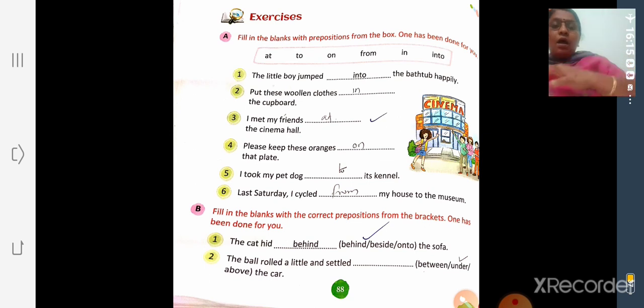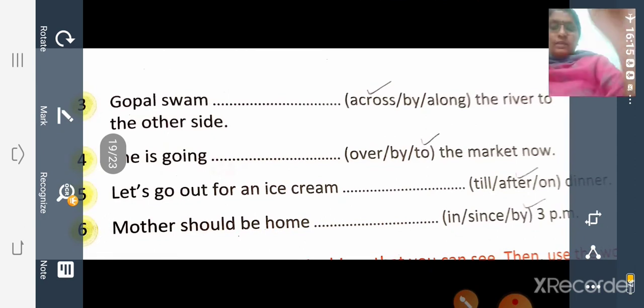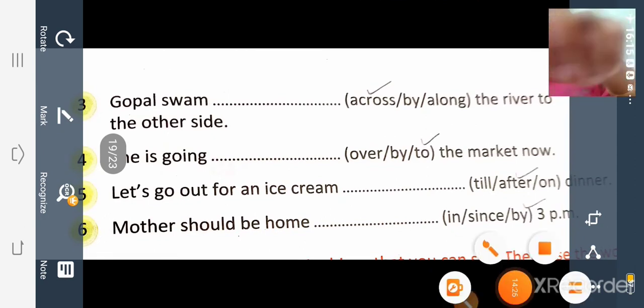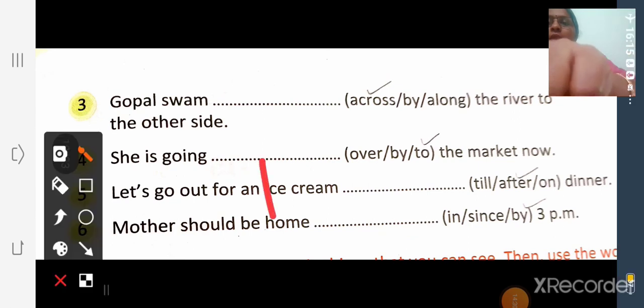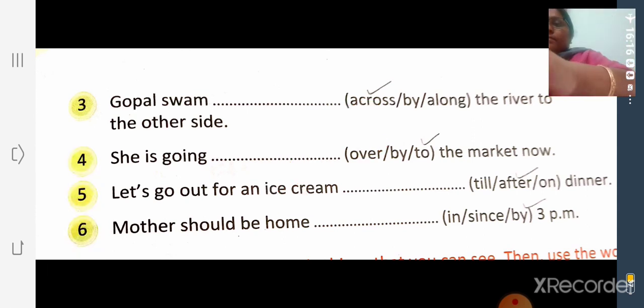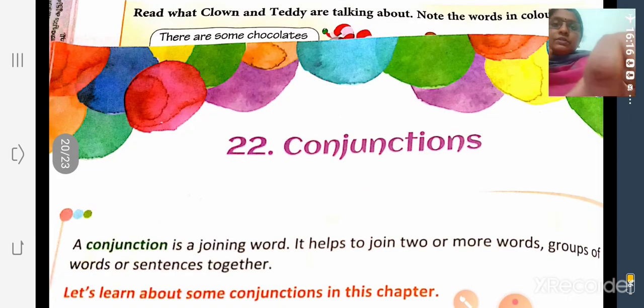Then prepositions of place. Prepositions of place, study exercise A, fill in the blanks with prepositions from the box. Exercise A and B. Here exercise A and B, prepositions of place and movement, exercise A and B you have to study.